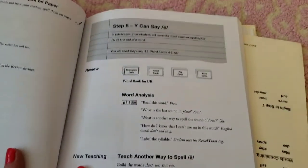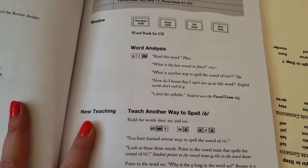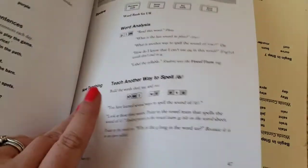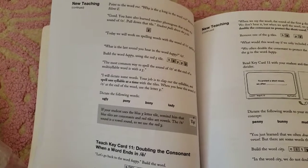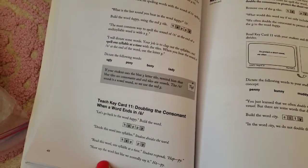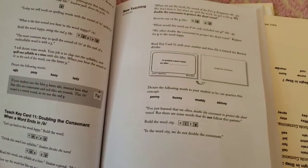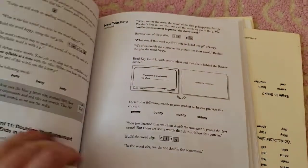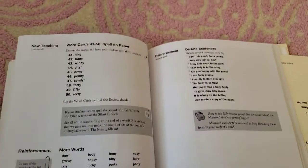Here's lesson eight. Tells you everything to say and do. Tells you to have them dictate the following words. Literally it tells you phrase for phrase and word for word how to teach it and explain it to them. And you can just open this book as you go along.